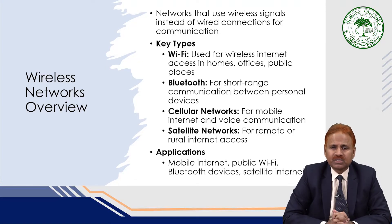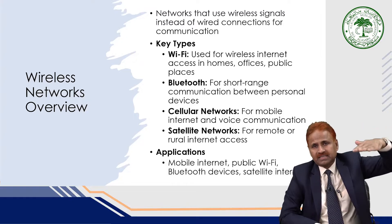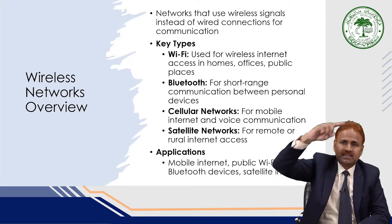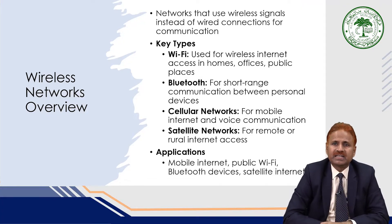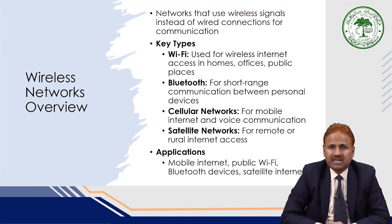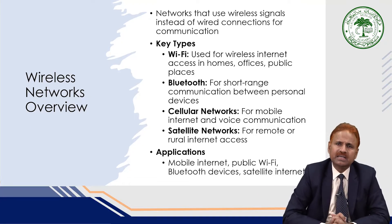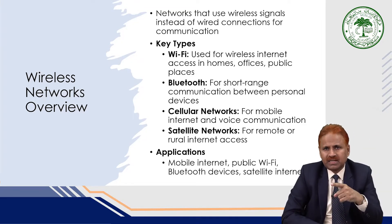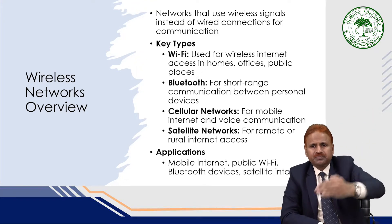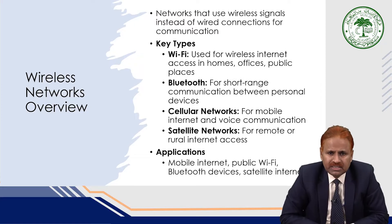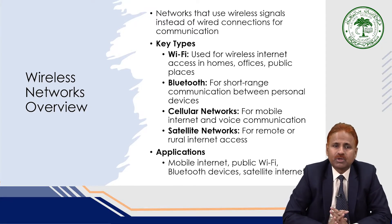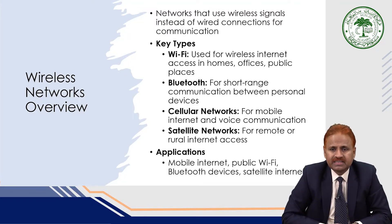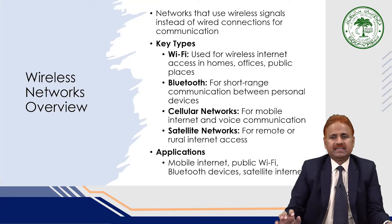Another example of a wireless network is satellite networks, used for remote or rural internet access. Satellites are placed at a certain height above the equator, and devices are connected through satellite communication using microwave signals — basically around 1.4 GHz or 1.6 GHz — in line-of-sight communication with no obstacle between devices. Applications of wireless networks include mobile internet, public Wi-Fi, Bluetooth devices, and satellite internet.